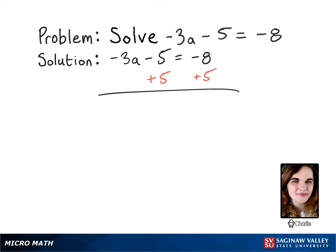Since it's minus 5, you want to cancel it by adding it. So what's left on the left side of the equal sign is just the negative 3a, and what's left on the other side is negative 8 plus 5, which is negative 3.